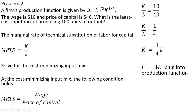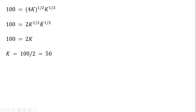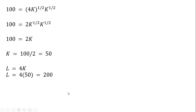Now I substitute L equals 4K into the production function with Q equals 100. Where I see L, I plug in 4K, and we must take the square root of both 4 and K — so the square root of 4K. The square root of 4 is 2, giving 2 times K to the one-half times K to the one-half. Adding the exponents on K gives K to the first power, so 2K equals 100, meaning we use 50 units of capital. Since L equals 4K, plugging in K equals 50 gives 200 units of labor.